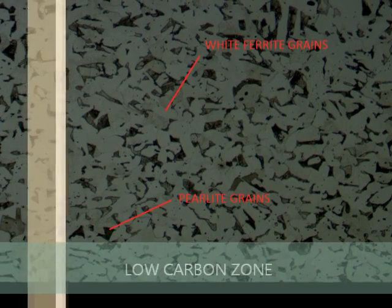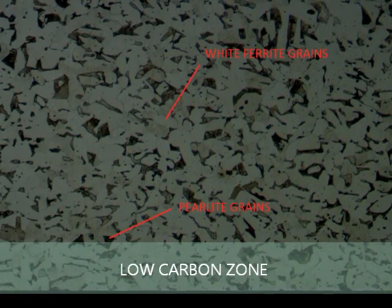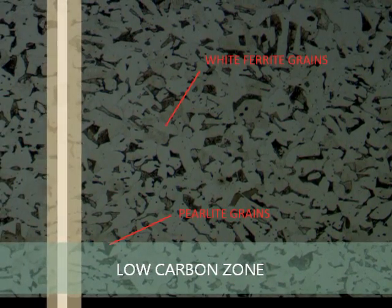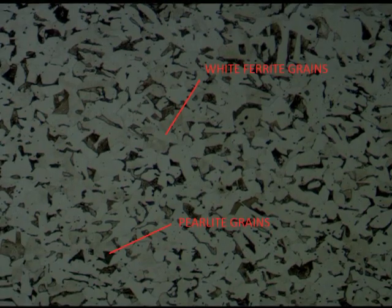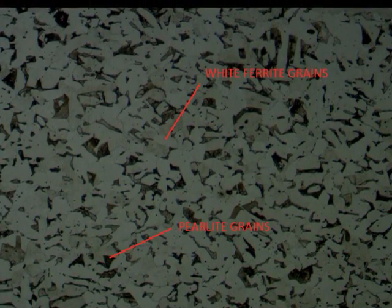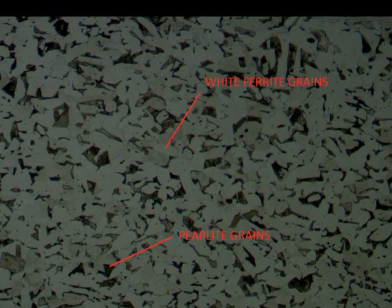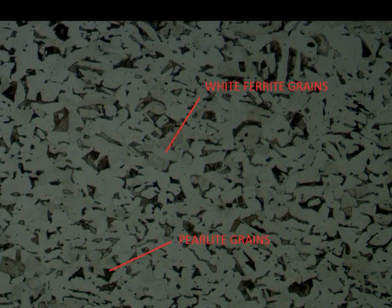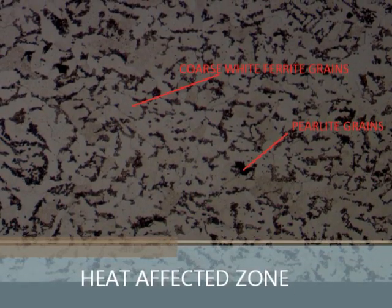And now, we move on to the microstructure of the various zones. After carrying out all the processes such as grinding, polishing, etching, these are the pictures we have got for the microstructures. First of all, the low carbon zone. In this picture, you can see that the white colored grains are ferrite grains and the dark black colored are the pearlite grains. Pearlite grains which contains alpha ferrite and cementite.